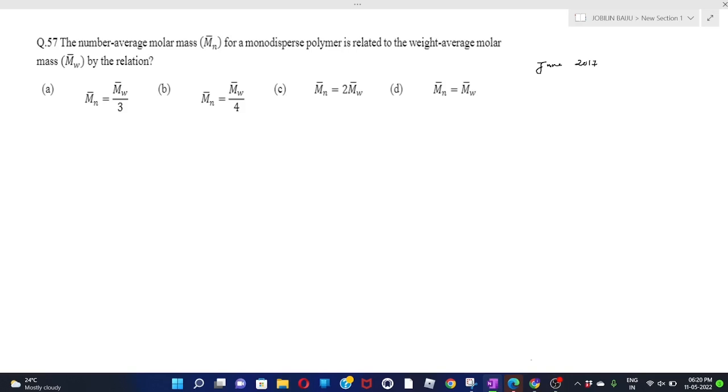We can talk about this question. This question I have taken from June 2017 CSIR NET. The question says that the number average molar mass for a monodispersed polymer is related to the weight average molar mass by the relation. It says what will be the relation between.